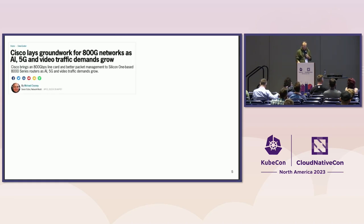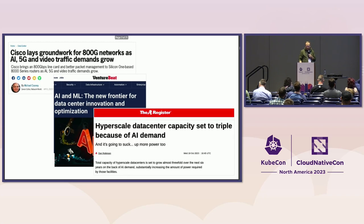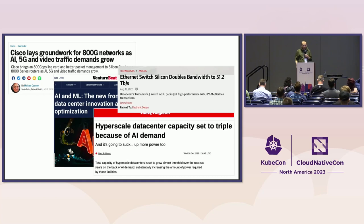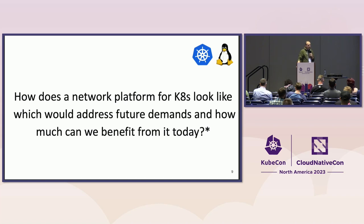For the latter, that's quite a big push in the industry right now. We see new NICs coming up with 800 gigabit and beyond. There's a big hype around AI and machine learning driving data center innovations. The hyperscalers are increasing their capacity and we even see switches coming to market with 51.2 terabit per second, which is really crazy. So the question, coming back to the Kubernetes world, is how would such a platform look that could potentially address those future demands? And the more practical question is, what can we benefit from today — especially without having to rewrite existing applications?